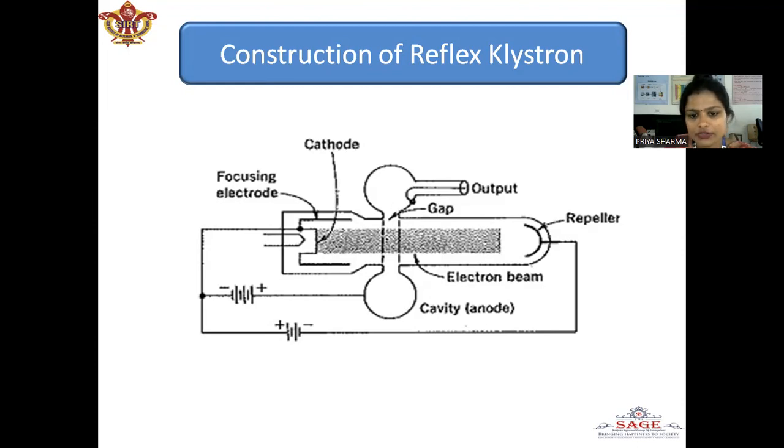Bunches occur once per cycle centered around the reference electron ER and these bunches transfer maximum energy to the gap to get sustained oscillations. For oscillations to be sustained, the time taken by the electrons to travel into the repeller space and back to the gap, which is known as the transit time.